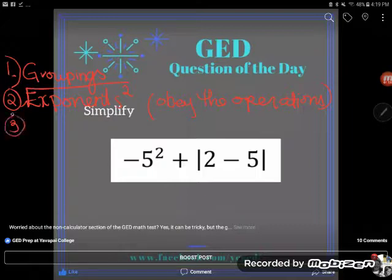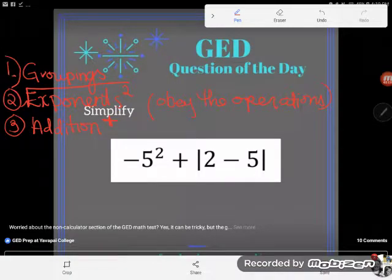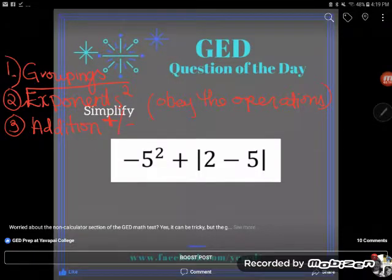Then we have addition and its inverse. You always do an operation with its inverse at the same step. So the inverse of addition is subtraction.